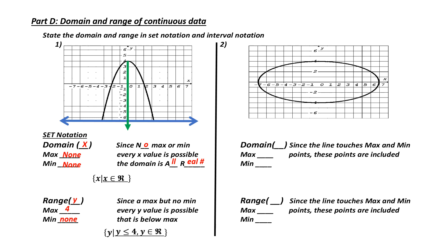Number 2: I notice that I've got an enclosed ellipse. Let's start with domain — domain is a listing of the x values. The x values are everything between negative 7 and positive 7. So I have a maximum value of 7 and a minimum value of negative 7. Since I'm talking about domain, it's going to be squiggly bracket x. Because my line touches both 7 and negative 7, I include those points — so x is greater than or equal to negative 7, but less than or equal to positive 7. Because I'm dealing with a range of values, x is a subset of all real numbers.